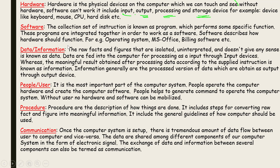Software is a collection of instructions with specific functions. We have two types of software: system software and application software. System software includes the operating system and device drivers. Application software includes programs we install to perform specific tasks, such as various downloaded applications.